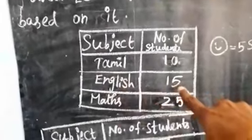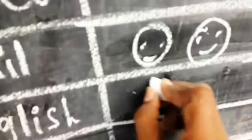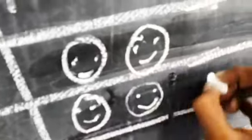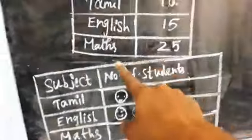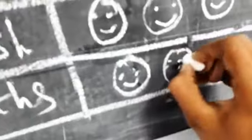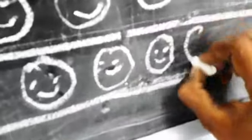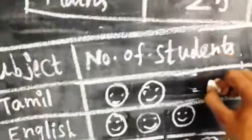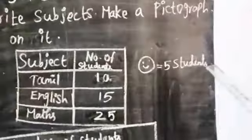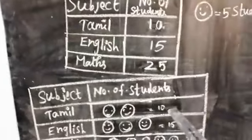For English with 15 students — five students is one smiley, ten students is two smileys, fifteen students is three smileys — so draw three smileys. For Maths with 25 students — five, ten, fifteen, twenty, twenty-five — draw five smileys. That is how you make a pictograph.